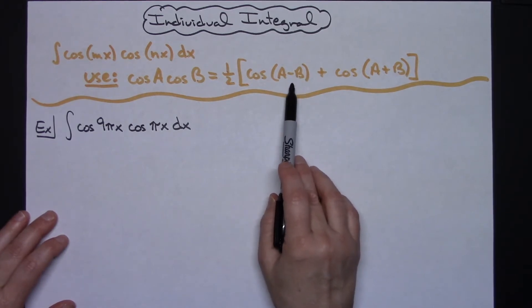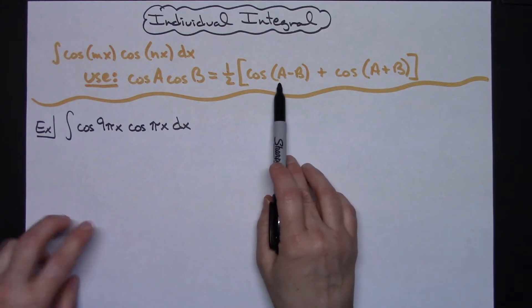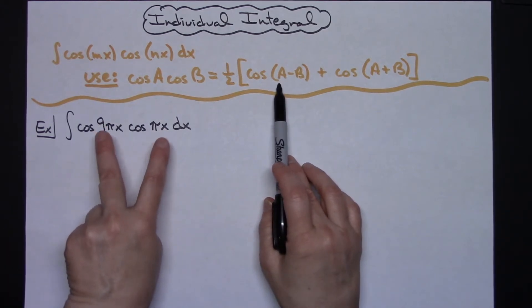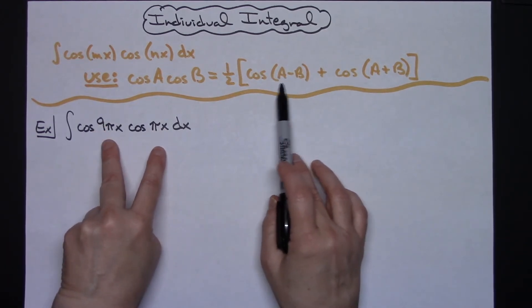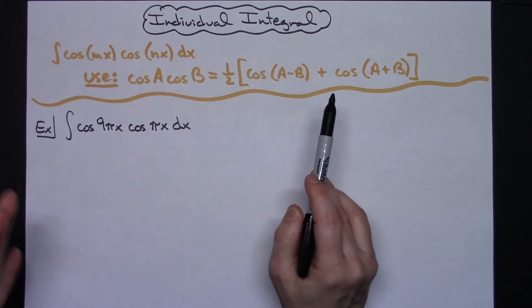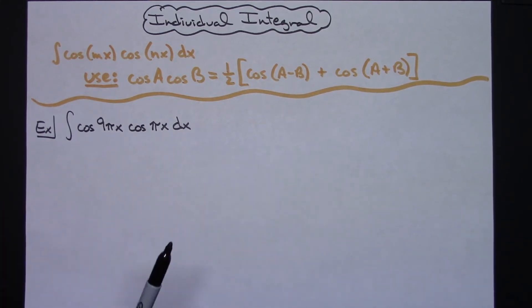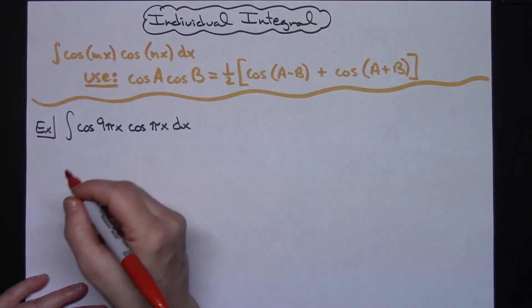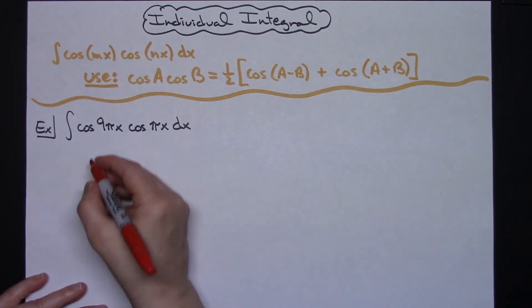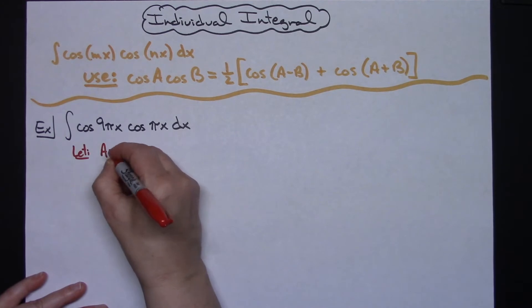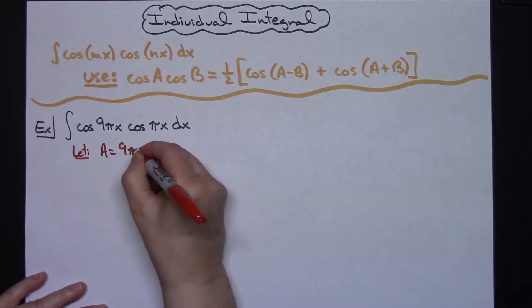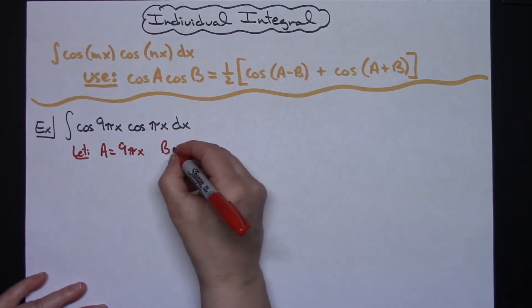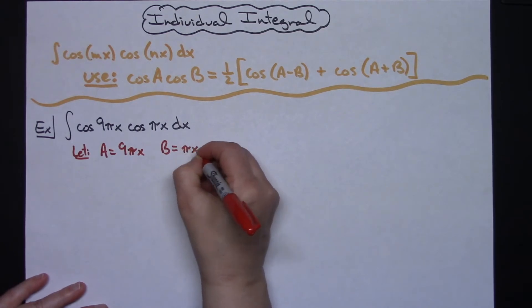You do not want this quantity to be negative, so you're going to want to choose your A to be the bigger of the two, so that when you do that subtraction it is going to be positive. That just makes the integral a little bit easier to work with. On this one I've got 9πx and πx, so I'm going to let A be 9πx and I'm going to let B be πx.